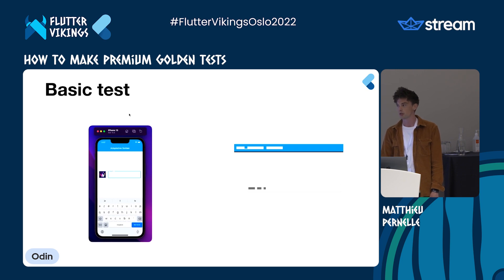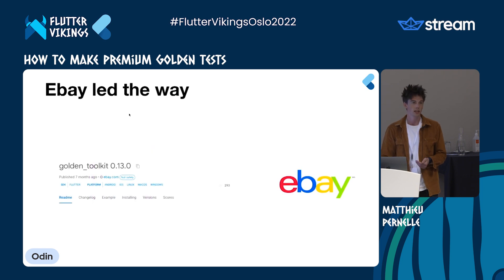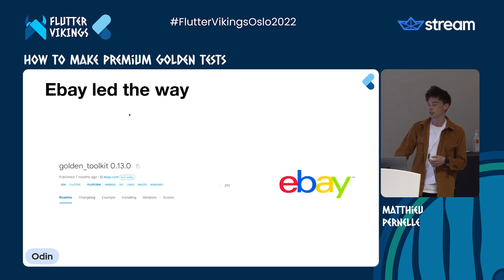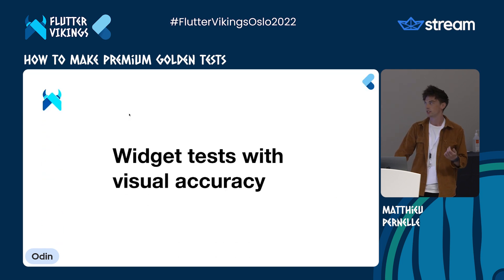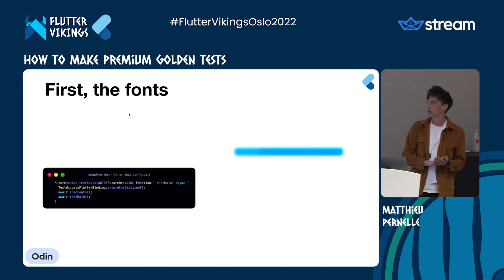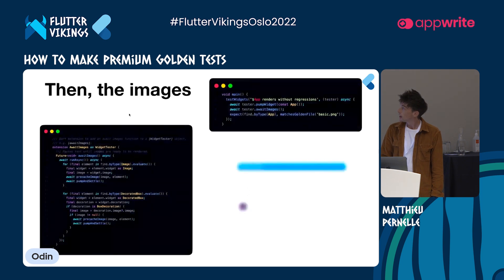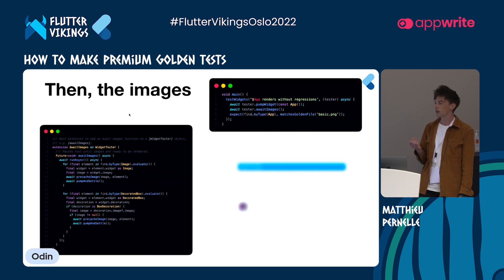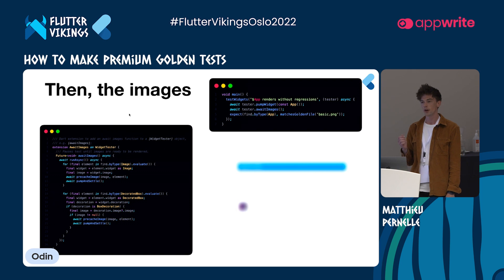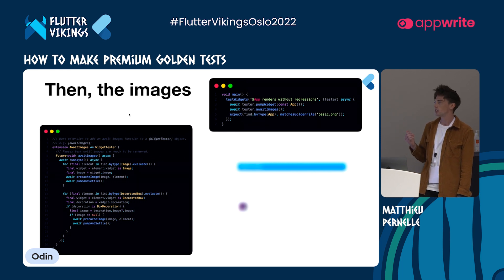Could we generate a more realistic image? Well, eBay led the way with the package golden_toolkit. Let's use it and add visual accuracy to our test. First, by using eBay's font loader we can get rid of those squares. Just note that you will need to add the font file into your Flutter assets. Then, even if it might take more time to render, we can create an image loader that will find every image widget and pre-cache them.